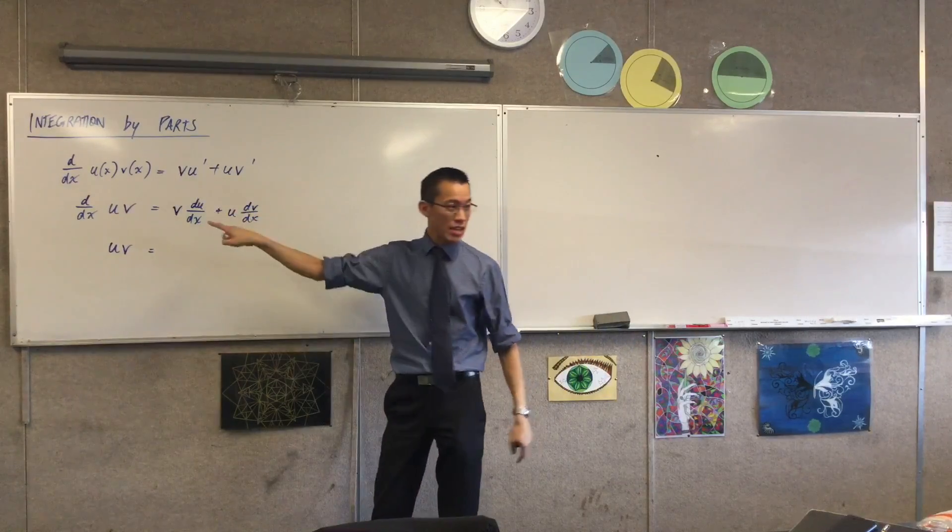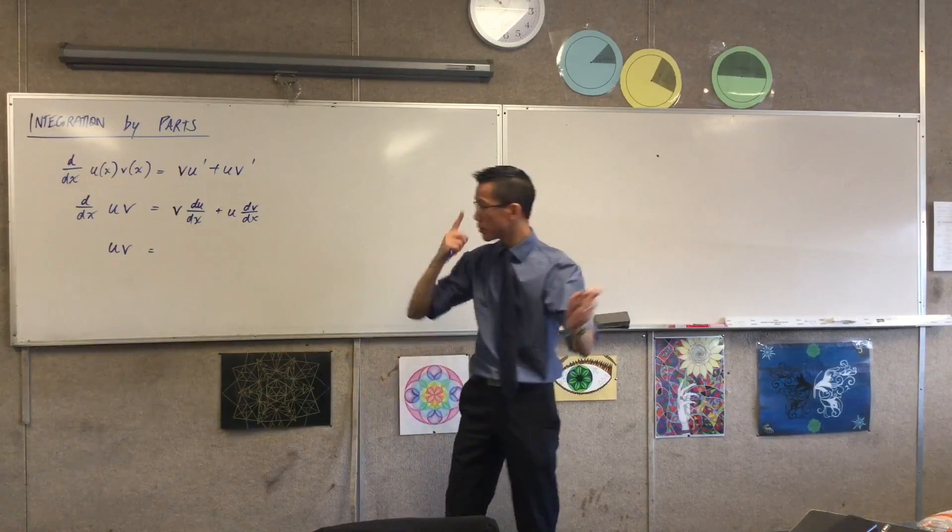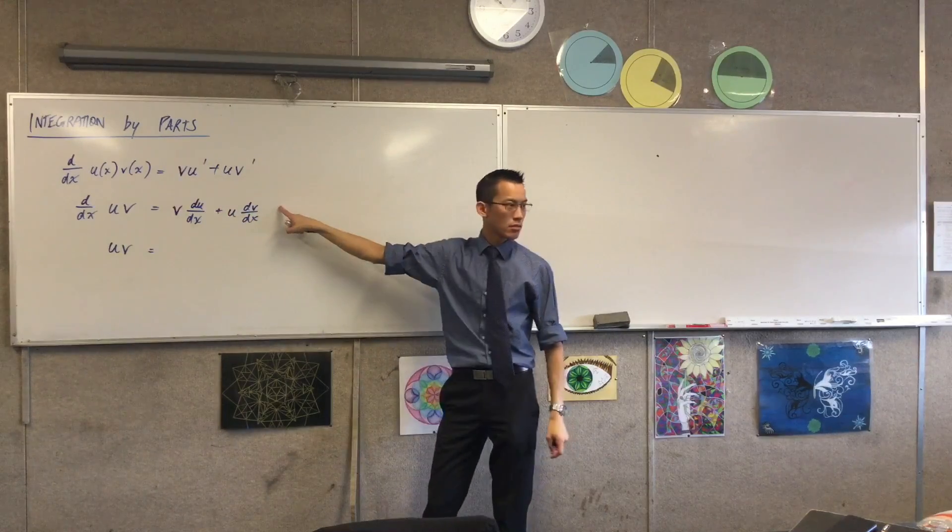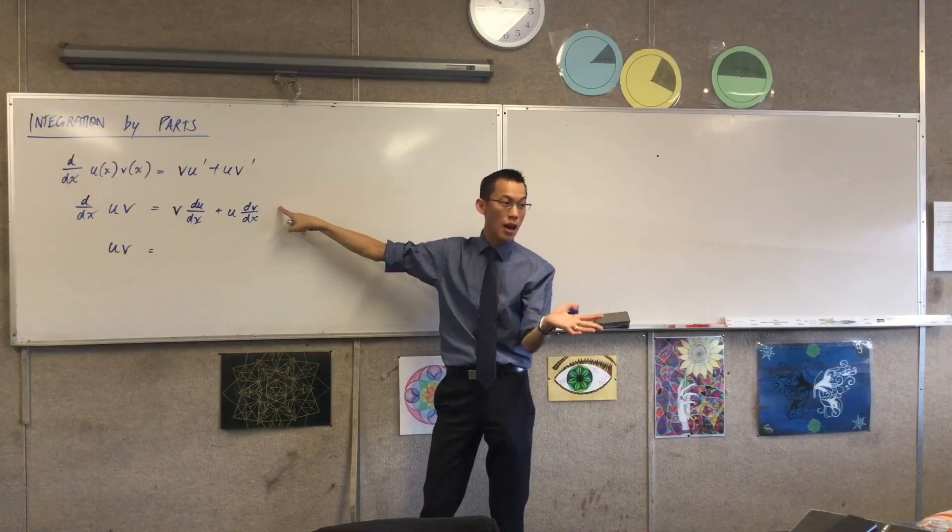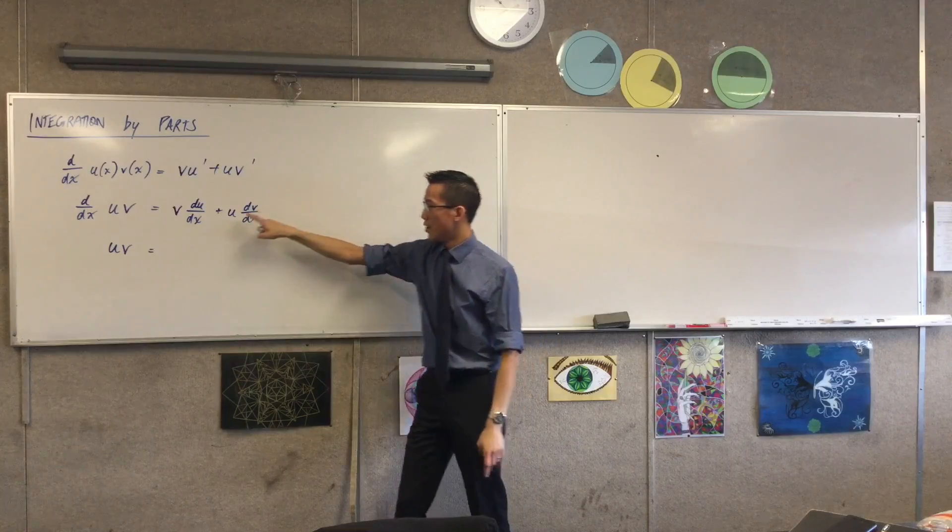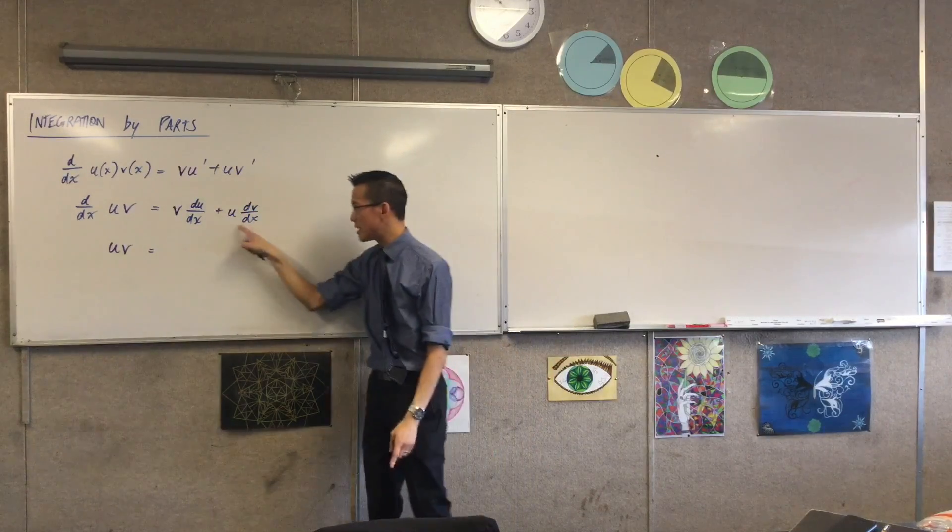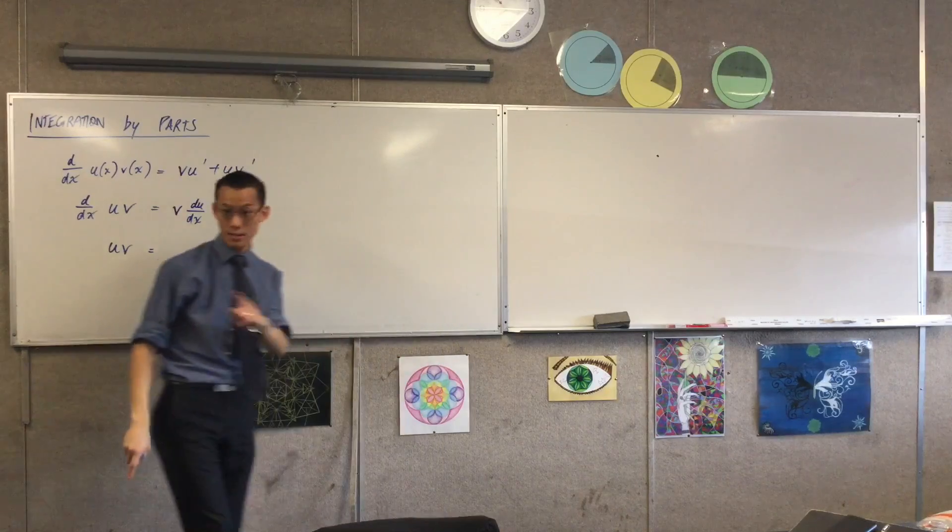Now, when I integrate each of these with respect to x, I would have integral dx, integral dx. Do you agree with that? But just as we've seen a hundred times with integration by substitution, the dx's that I add on are going to cancel with these divided by dx's that are already there.